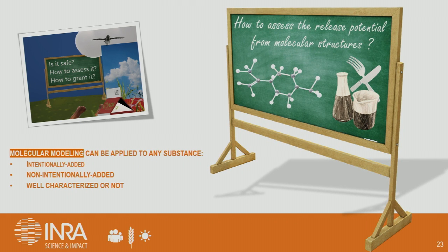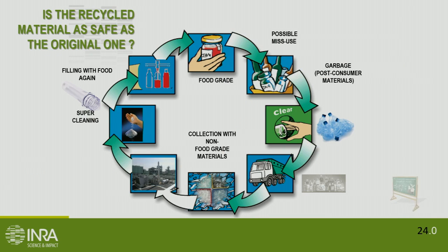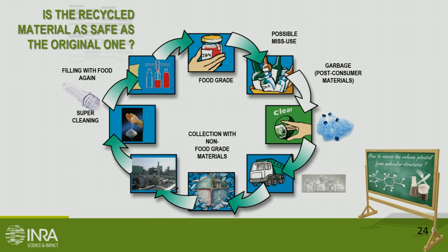Something also quite useful with modeling is that we can assess the release potential directly from molecular structures. For recycling materials, the problem is that you don't know well the contaminants — they are post-consumer contamination, non-intentionally added substances, and we know little about them. We don't even have the pure substance.